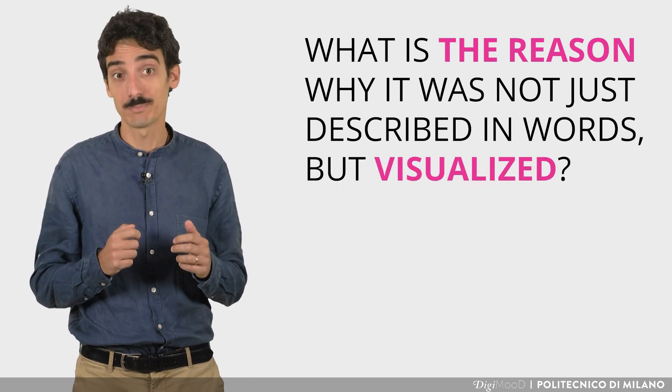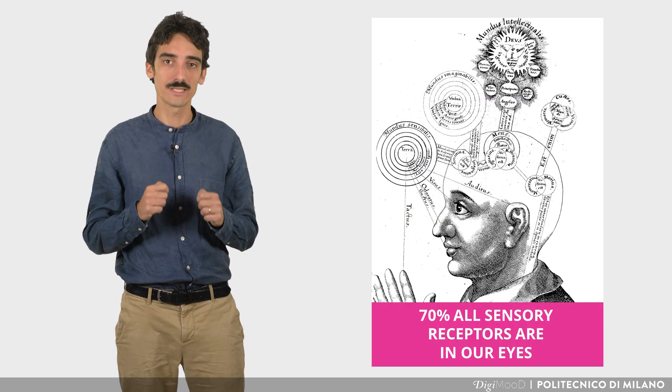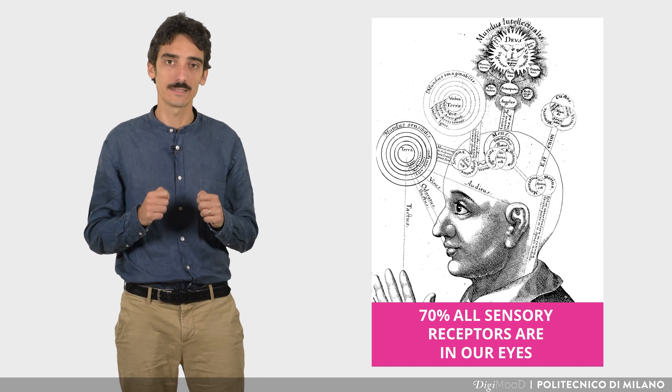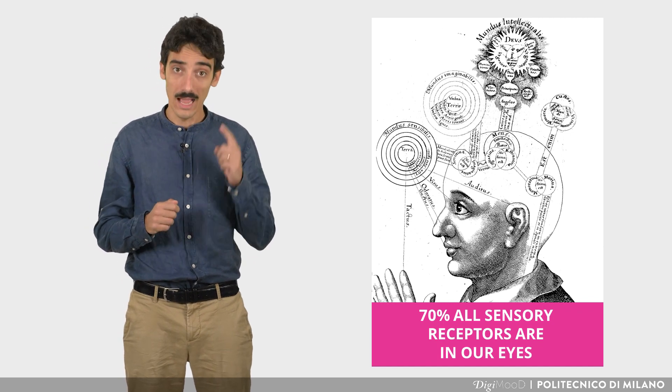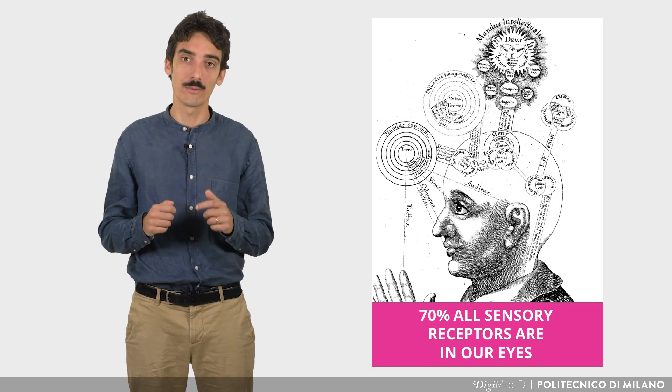The answer is pretty simple. We use visualization to take advantage from our natural abilities. It's estimated that 70% of all sensory receptors are located in our eyes. Our brain is trained to interpret visual information often without being aware of it.